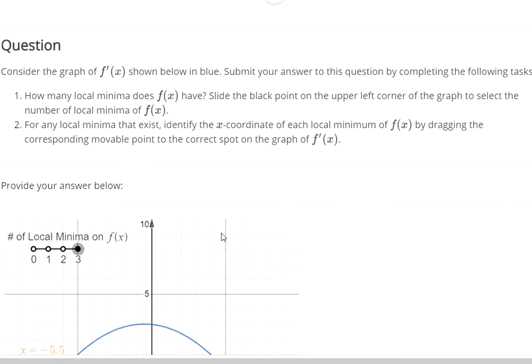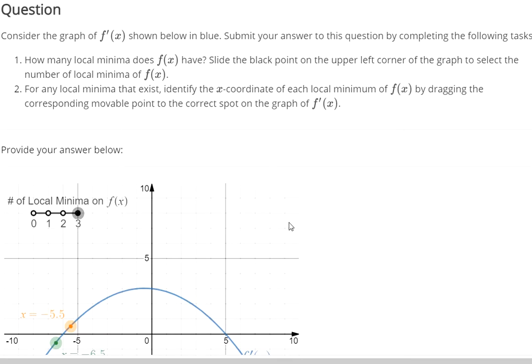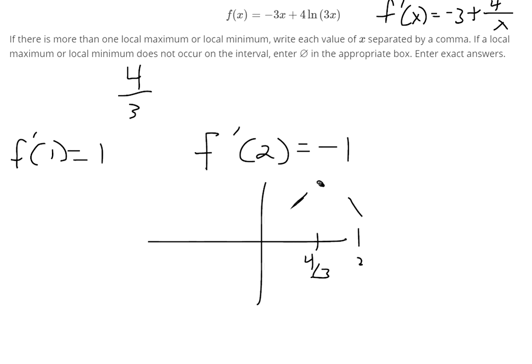So we've got to use the definition of the first derivative test. The first derivative test says if you have a negative slope and then it changes to a positive slope, you've just hit a local minimum.